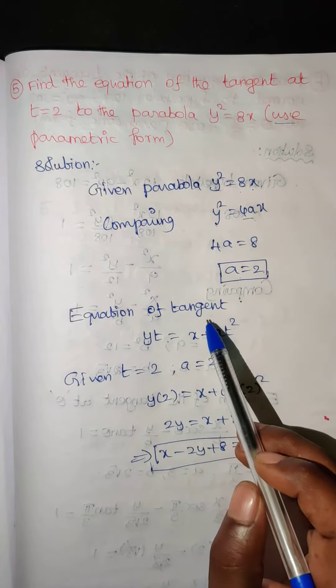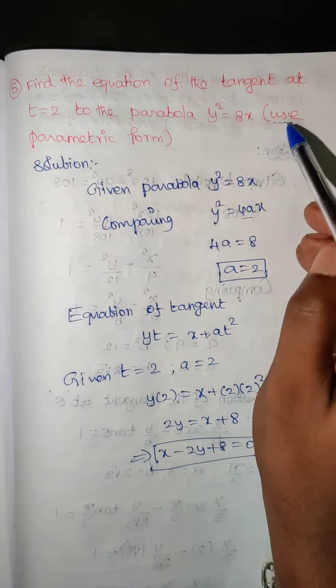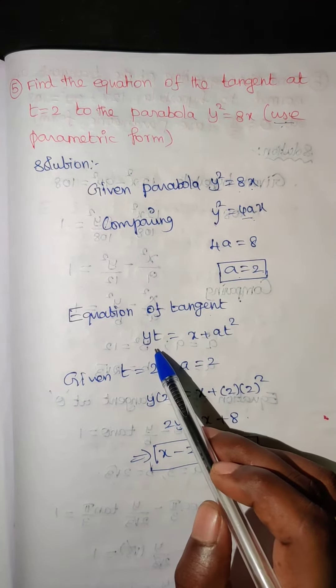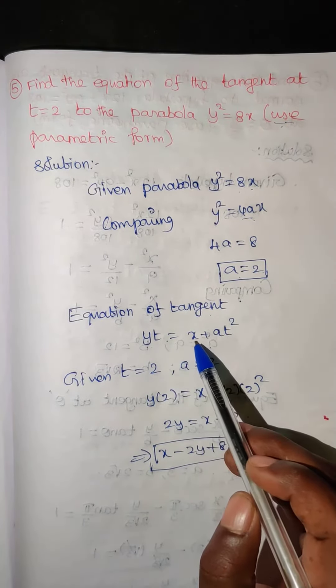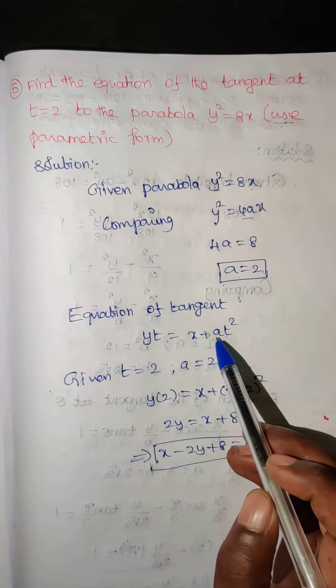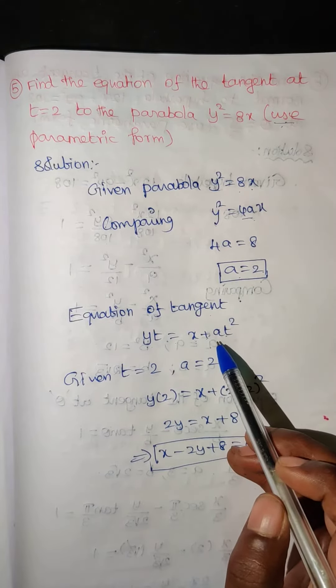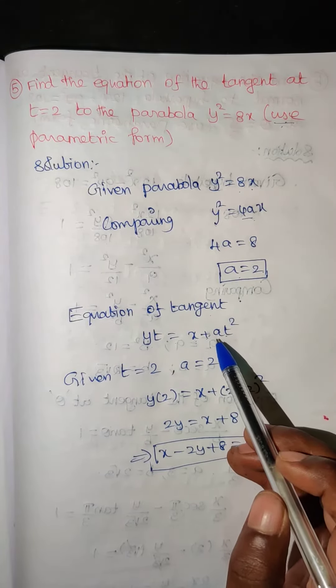So equation of tangent, use the parametric formula. Equation of tangent formula: yt equals x plus at squared. This is the equation of tangent to the parabola in parametric form.